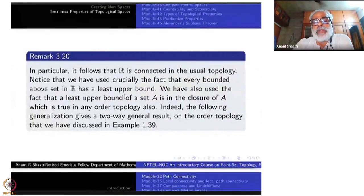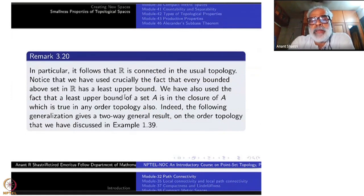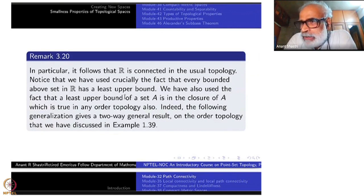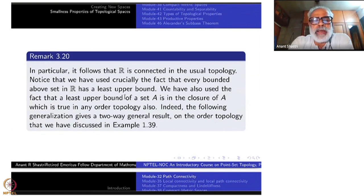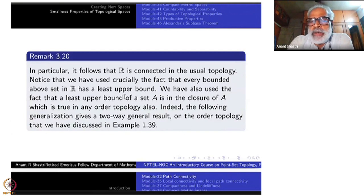In particular, it follows that R itself is connected because R is an interval. Notice that we have crucially used the fact that every bounded-above set in R has a least upper bound — this is the only key property used, equivalent to saying every bounded-below set has a greatest lower bound. We also used the fact that the least upper bound of a set A is in the closure of A, which is true in any order topology and has nothing to do specifically with real numbers. This suggests the following generalization involving the order topology discussed in example 1.39 in the first chapter.